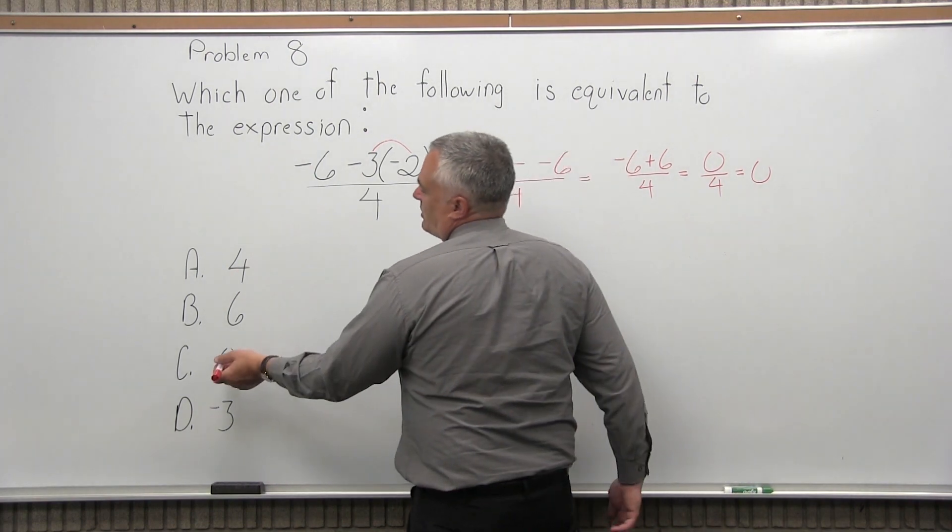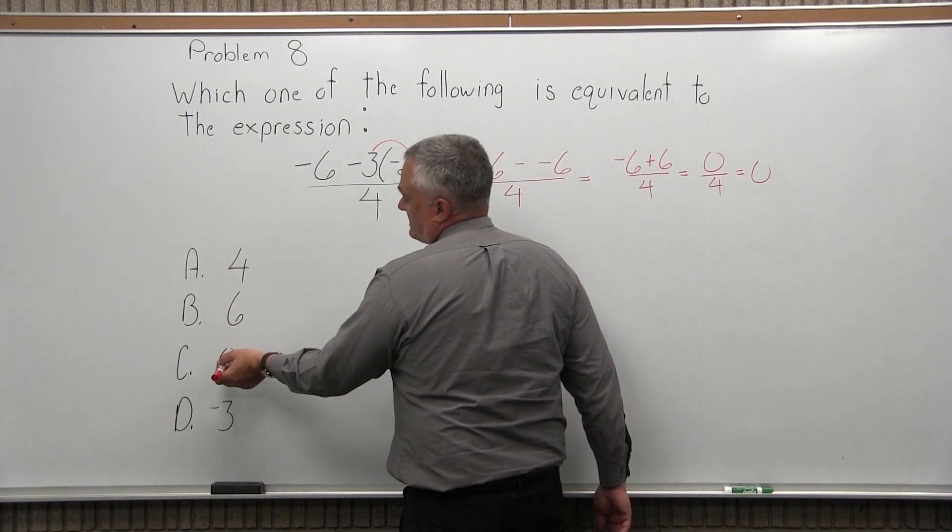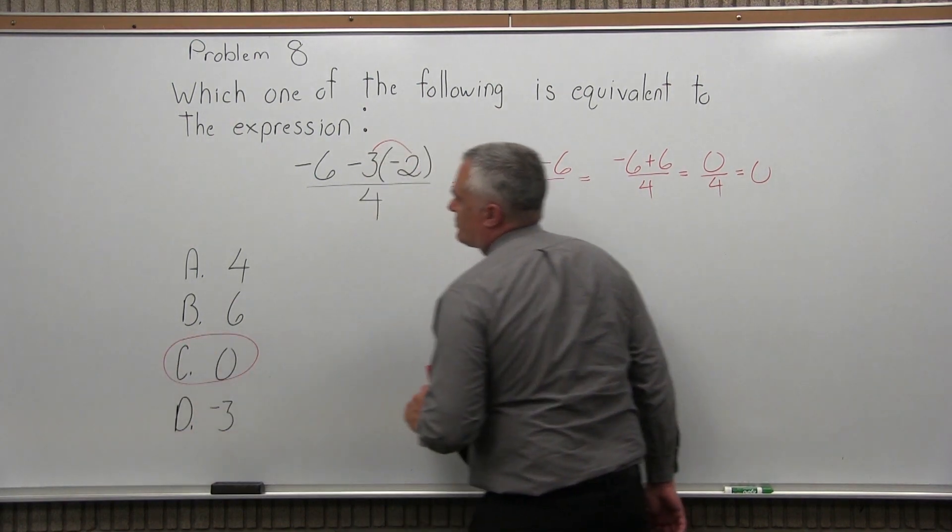If you look at your options, one of them is 0. A is 4, it's not that, B is 6, not that, C is 0. So it's that one. D is negative 3.